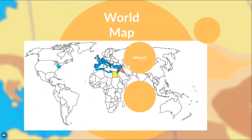Mesopotamia covers modern-day Iraq and a little bit of Syria — that little orange spot right on the map. Everything else that's colored in represents things we're going to cover in this unit, and I'll slowly fill in this map as we go.